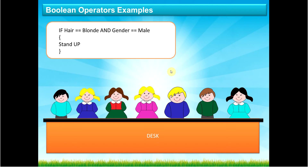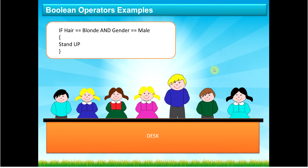Let's try: if hair == blonde AND gender == male, stand up. On an AND statement, both conditions must be true — you have to be both blonde and male. Going through each student: not blonde, failed; blonde but not male, failed; not blonde, failed; blonde but not male, failed; blonde and male — passed! Not blonde but male, failed; not blonde and not male, failed. Only the one young man with blonde hair who is male met both conditions and stood up.